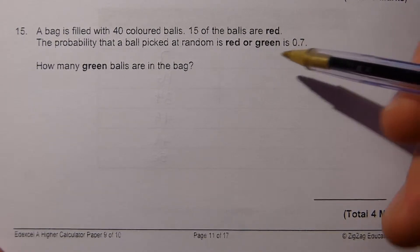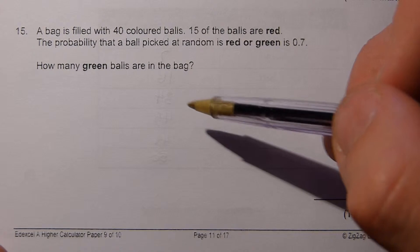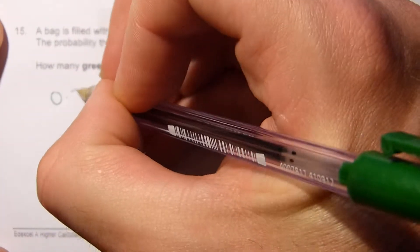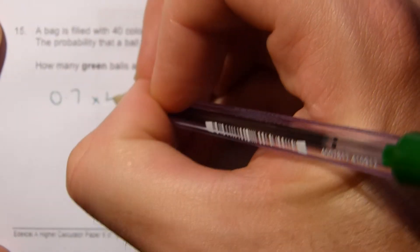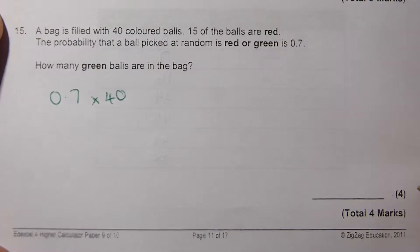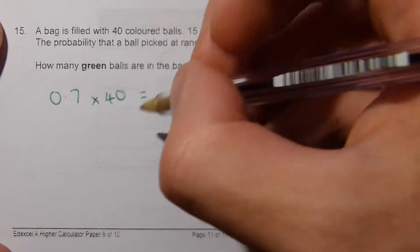So let's start with that and work out how many balls in the bag are red or green. Now we can do that by taking the probability and multiplying that by 40. And 0.7 times 40 is 28.